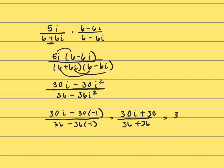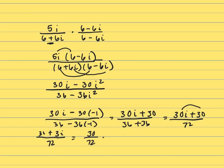So that's 30i plus 30, all over 72. I'm going to rewrite this numerator as 30 plus 30i. So we have 30 plus 30i over 72. Now break it up — that's 30 over 72 plus 30i over 72.